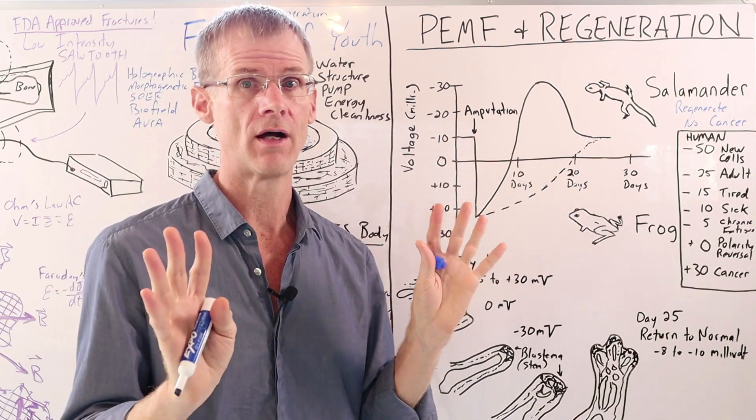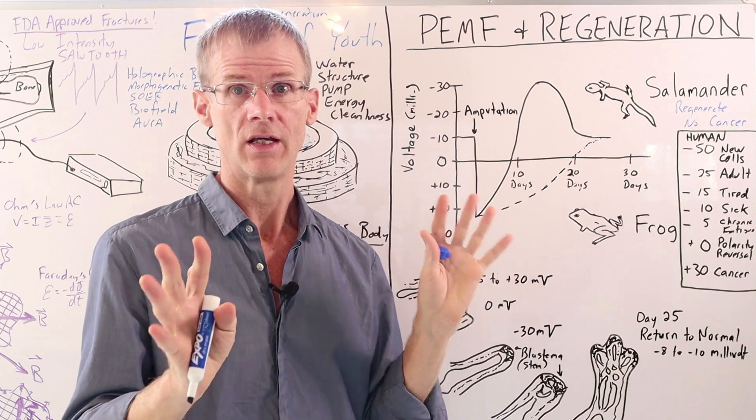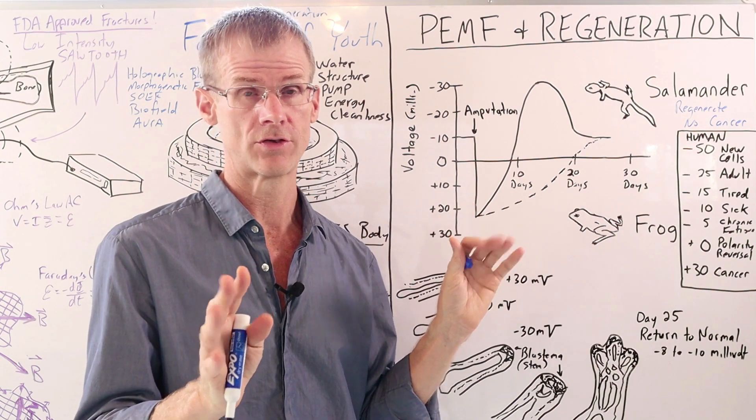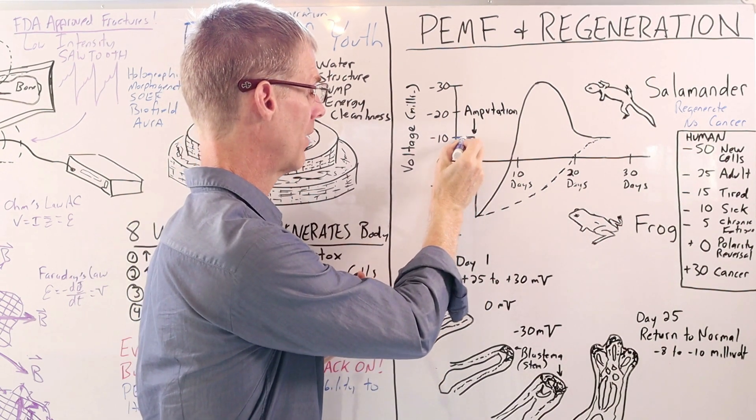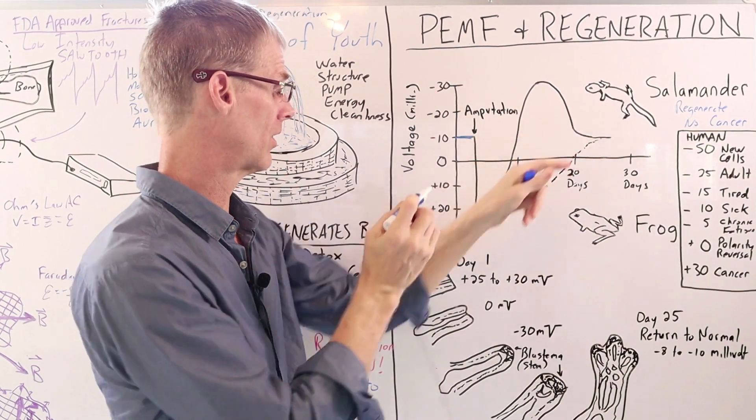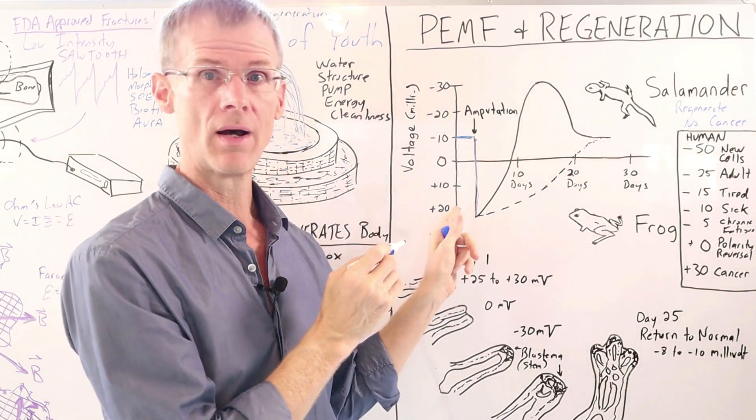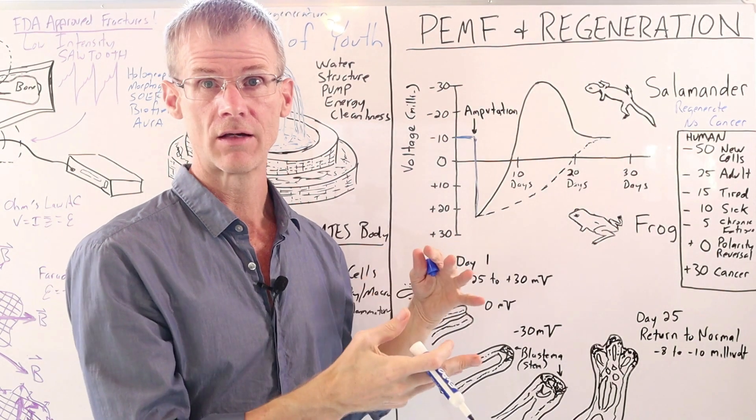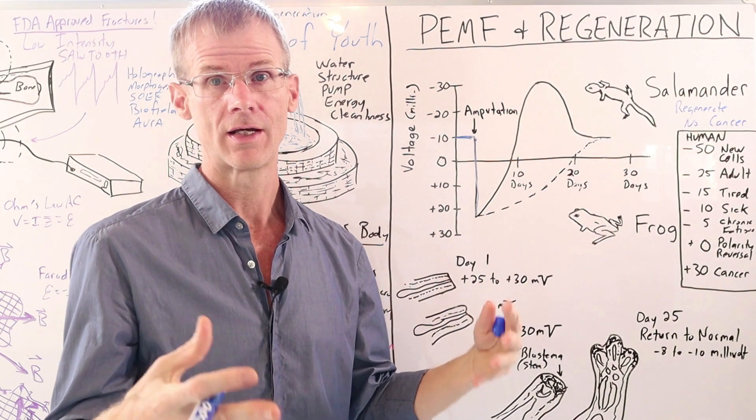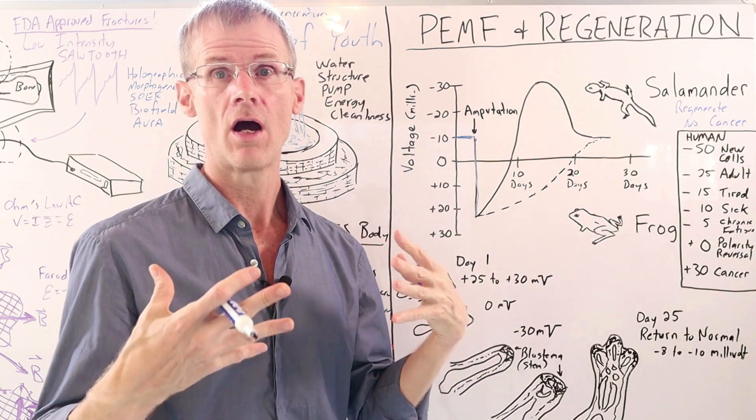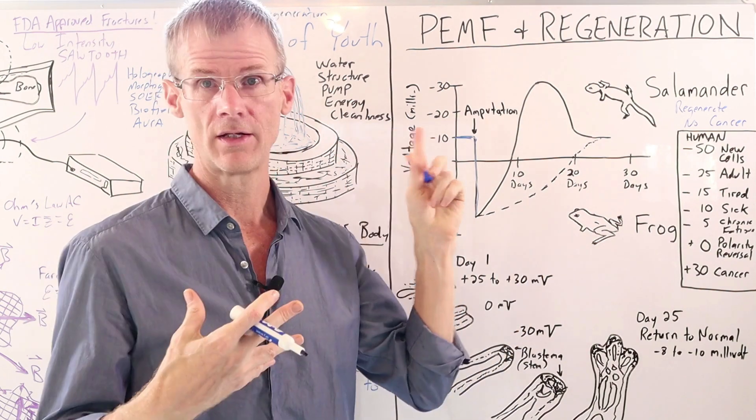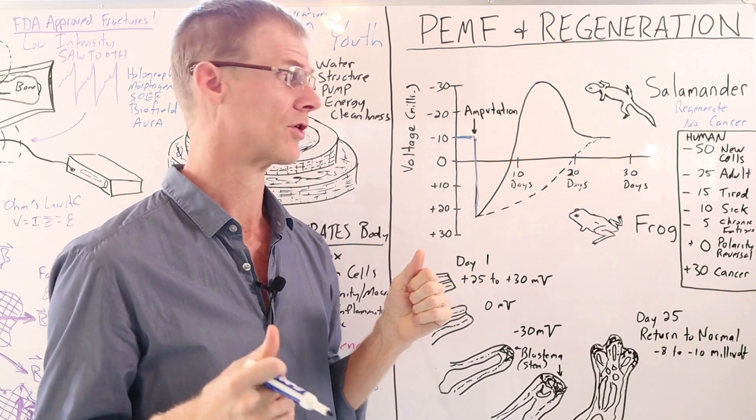And this is really the whole key to how PEMF therapy and energy medicine is so effective at healing and regeneration. So here we have amputation. Once the arm was cut off, there was an immediate drop in voltage. So again, keep in mind, positive voltage is a lack of energy. Remember, electrons are negatively charged and electrons are the carriers of energy. So our cells ideally should be in a negative voltage when they're highly energized.